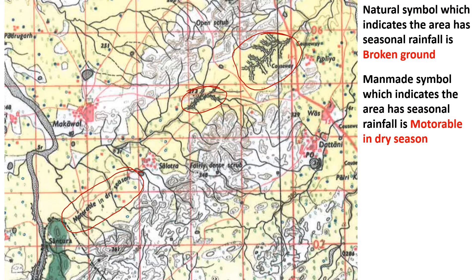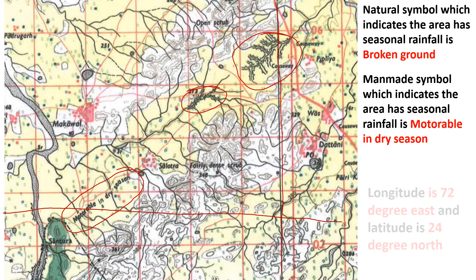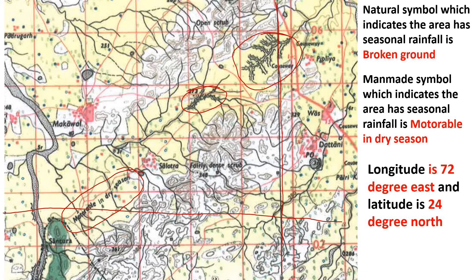So 'motorable in dry season' is the man-made symbol which indicates the area has seasonal rainfall. Now, we know this black line is a longitude. In some maps you might find another line — a latitude. There is only one latitude and one longitude on the map.